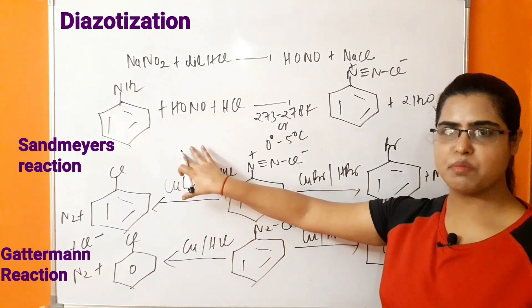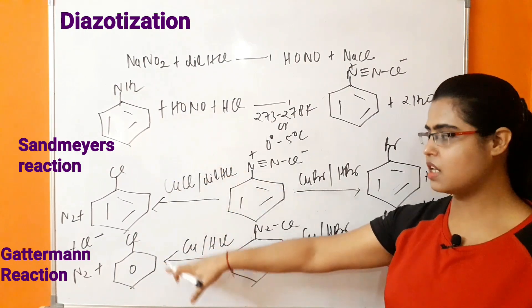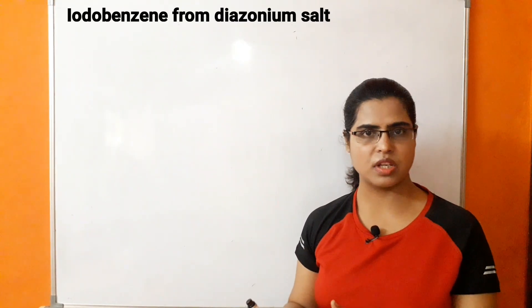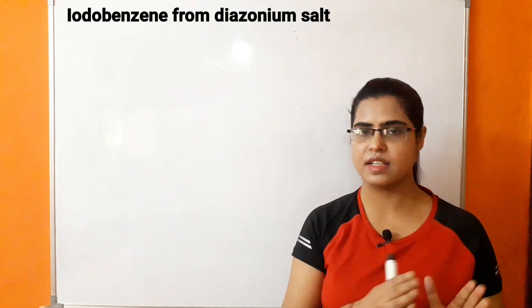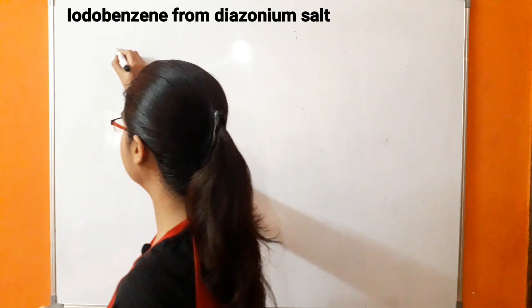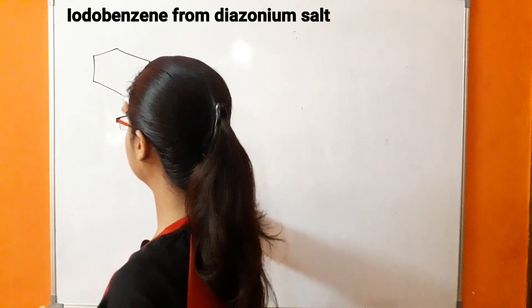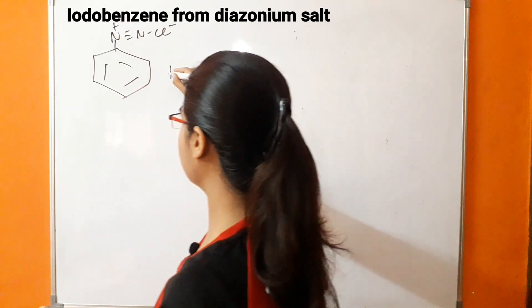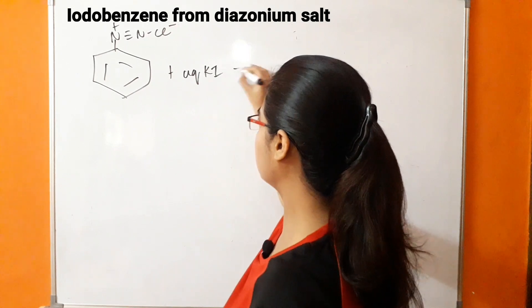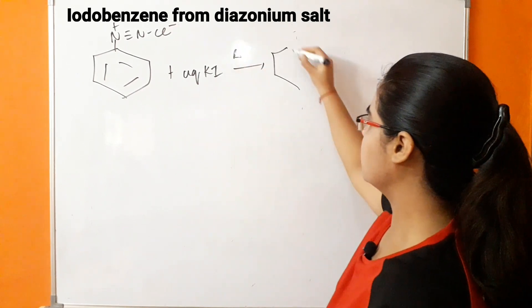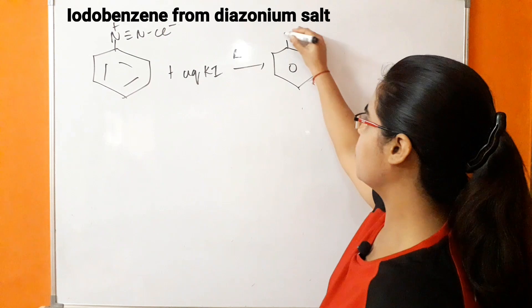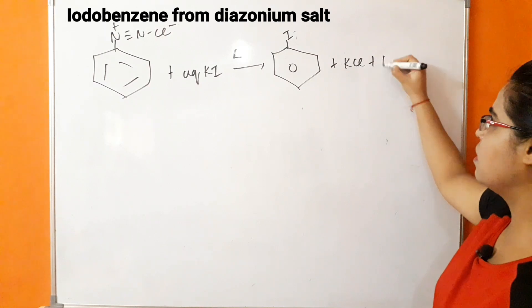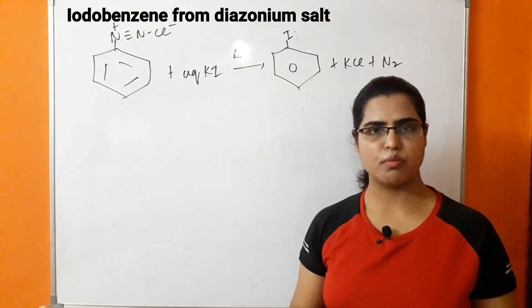The yield of Sandmeyer's reaction is higher compared to Gattermann reaction. We can also prepare iodobenzene from diazonium salt by simply warming with aqueous KI (potassium iodide). The diazonium salt in the presence of aqueous KI, when heated, produces iodobenzene with removal of KCl and N2.